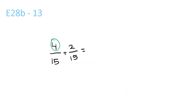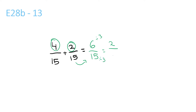So 4 plus 2 is just 6. Then we bring the 15 over — 6 over 15. That can be simplified because 3 goes into 6 and 3 goes into 15. So 6 divided by 3 is 2 and 15 divided by 3 is 5, giving 2 over 5.